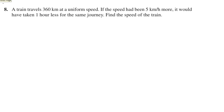Problem number 8. A train travels 360 km at uniform speed. If the speed of the train had been 5 km per hour more, it would have taken 1 hour less for the same journey. Find the speed of the train.